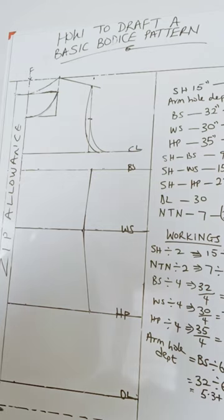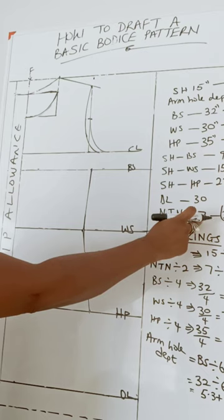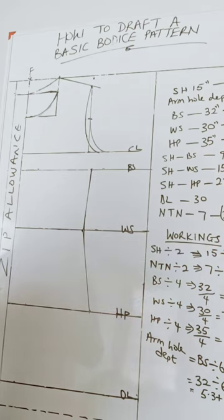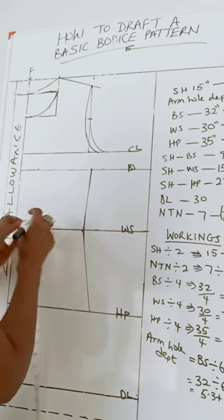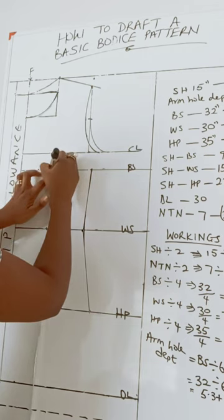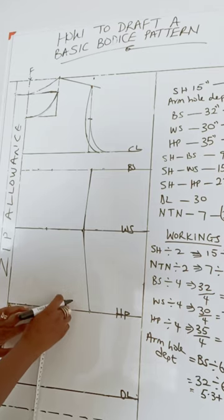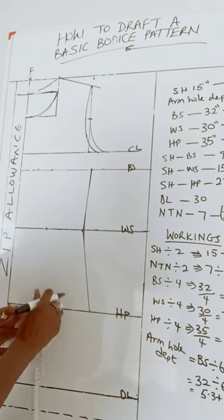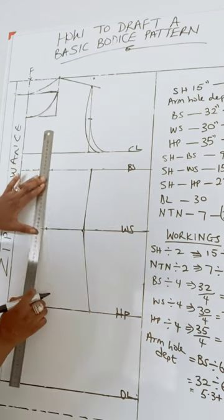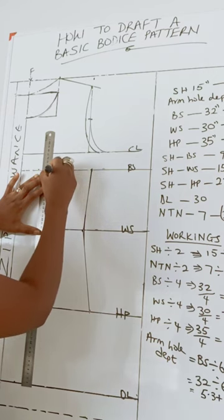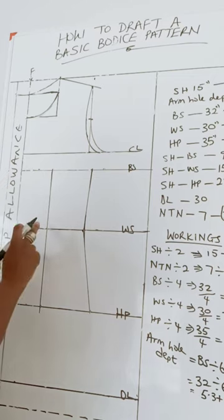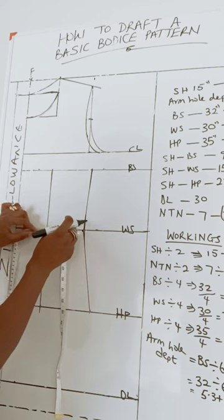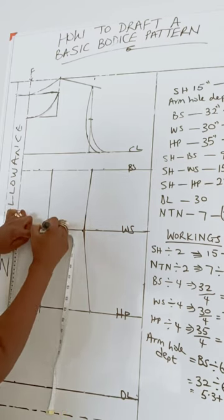So, let's input the dart. We are going to be taking a dart at the waistline. To get the position of the dart, that is why we use the nipple-to-nipple point of 7 — when you divide by 2, you have 3.5 inches. So place it at the beginning of the front bodice and mark out 3.5 inches on the waistline. Also mark out 3.5 inches at the bustline and 3.5 inches at the hipline, so that you can get a straight line. Connect all the lines together with your ruler. Now, the dart we are removing from the waist is 1 inch — half from this side, half from this side. So you place your tape: 0.5 inch, 0.5 inch.